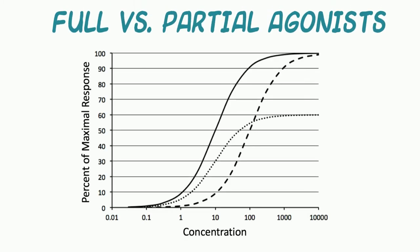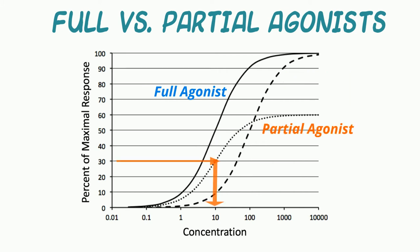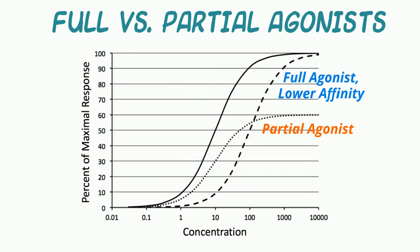In this log concentration response curve, the solid line traces the effect of a full agonist. Because the same maximal response is achieved, the drug represented by the dashed line is also a full agonist, but it has a lower potency, presumably due to reduced receptor binding affinity. The dotted line shows the curve for a partial agonist. Notice that it has a lower Emax than the other two drugs. Also, the EC50 of this curve shows that this partial agonist has similar affinity or potency to the first full agonist, but higher affinity or potency than the dashed full agonist. So if you look carefully, the dotted line of a partial agonist can have a greater effect than a similar concentration of a less potent full agonist as shown by the dashed line.